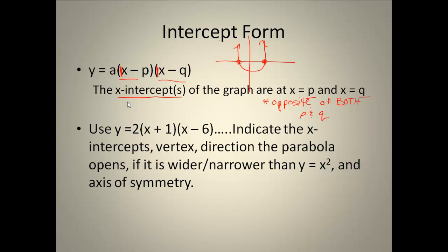So here's an example we're going to work with. It wants us to indicate the x-intercepts. Well, my x-intercepts are at the opposites of these two numbers. So my first x-intercept is going to be at negative 1. My next x-intercept is going to be at positive 6. So that tells me that the points where my graph crosses is when x is negative 1 and when x is positive 6.